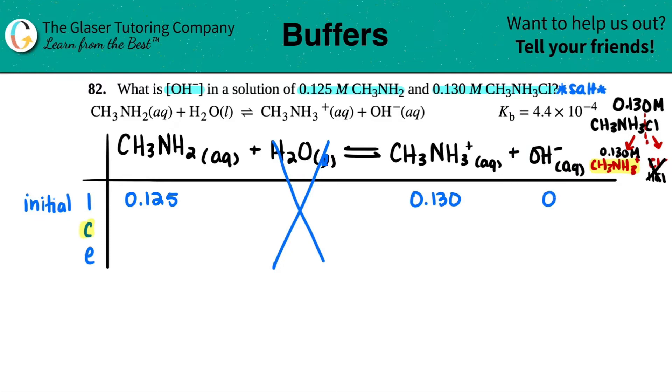C stands for the change in concentration. And since I did start off with a zero amount of hydroxide, I could only go up from there. So since OH is on the product side, all of the products would have to be increasing, which means I would have to plus by some value on my products. And for my reactants, I would have to subtract. We don't know what number it is, so I'm just going to label it as a variable x. So minus x, plus x, and plus x. E stands for equilibrium, and the equilibrium is just the initial and the change combined. So 0.125 minus x, 0.130 plus x, and 0 plus x is just x.